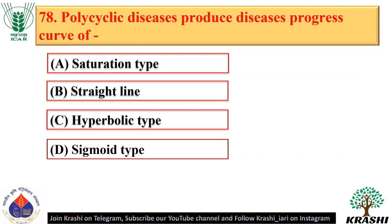Question number 78. Polycyclic diseases produce a disease progress curve of the saturation type — option A.